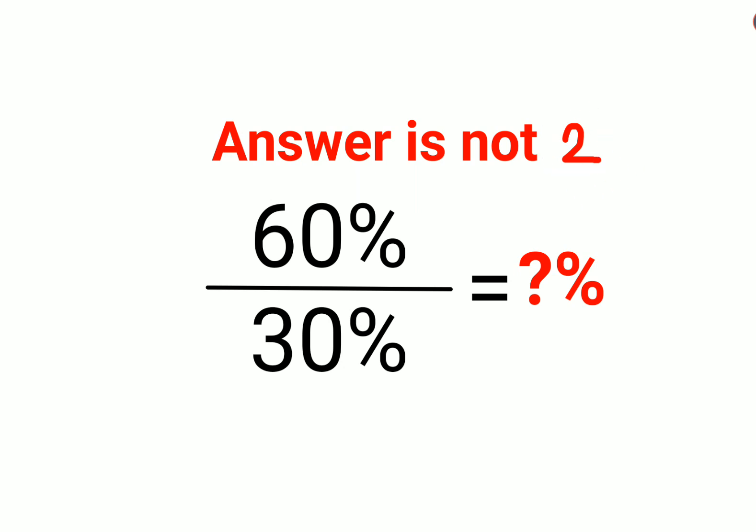The reason for that is basically, see, understand: whenever you have a percent situation, basically when you have a percentage sign followed after a number, you can convert that into a fraction by dividing that number with 100.